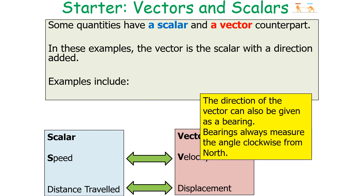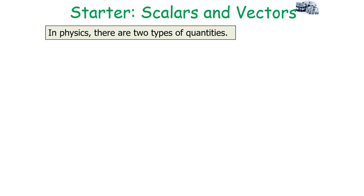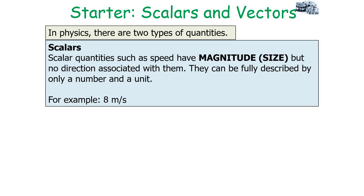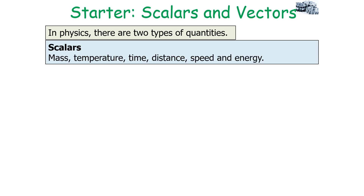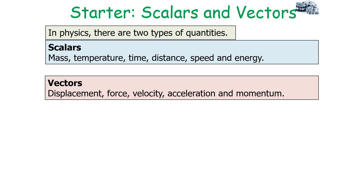In physics there are two types of quantities: scalars, such as speed, which have a magnitude but no direction — fully described by a number and a unit, for example 8 metres per second — and vectors, which are only fully specified when both a magnitude and a direction are given. For instance, it's not sufficient to say a force has a magnitude of 300 newtons; we need to state the direction, such as 300 newtons acting horizontally in a direction 30 degrees east of north. Scalars include mass, temperature, time, distance, speed, and energy; vectors include displacement, force, velocity, acceleration, and momentum.